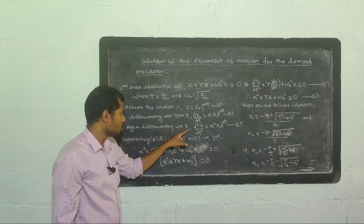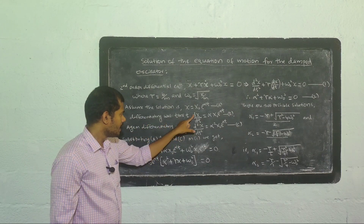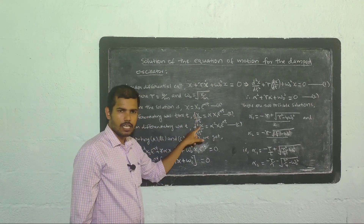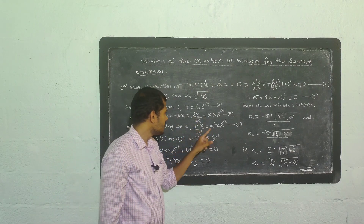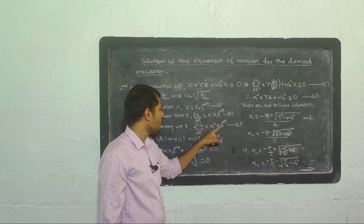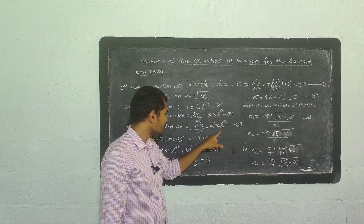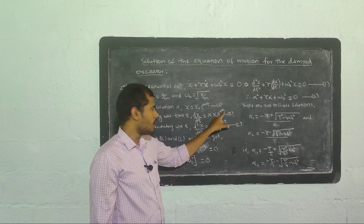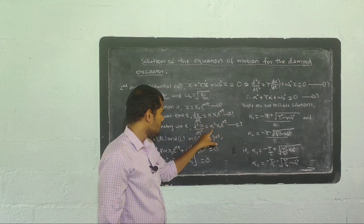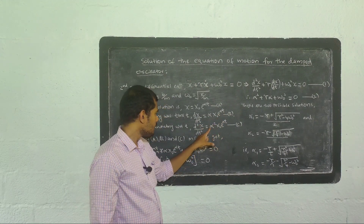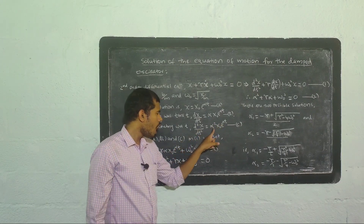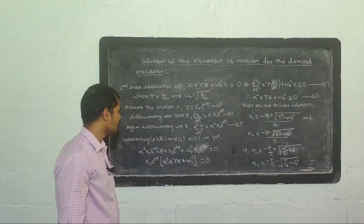Next, we differentiate dx/dt with respect to t again. Therefore d/dt of dx/dt is d²x/dt², which equals alpha x₀ times the derivative of e raised to alpha t, giving alpha times e raised to alpha t. So alpha times alpha is alpha squared, and d²x/dt² equals alpha squared x₀ e raised to alpha t. This is equation c.